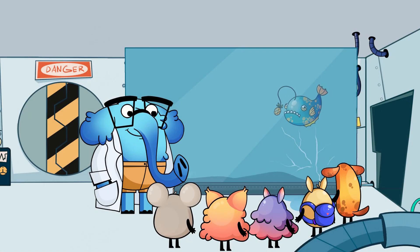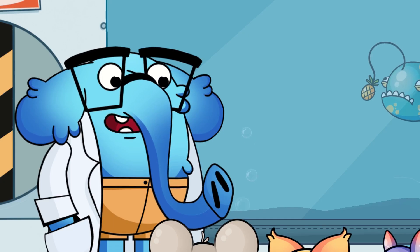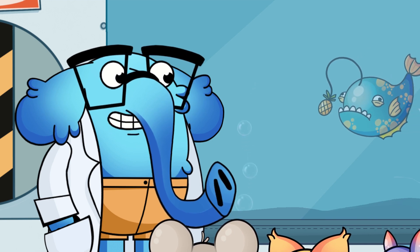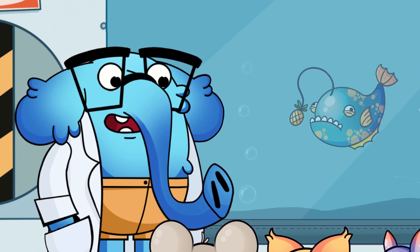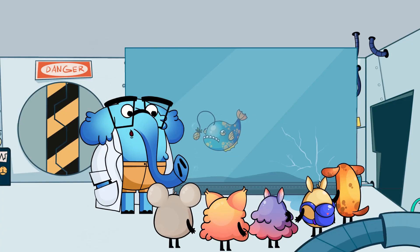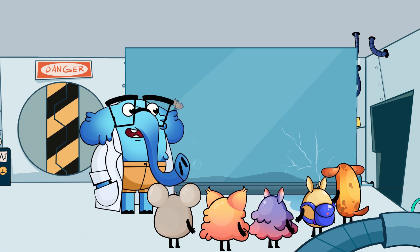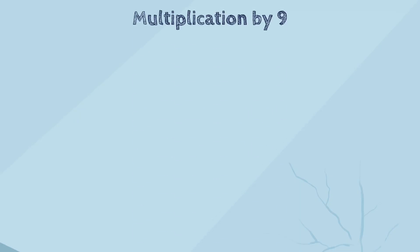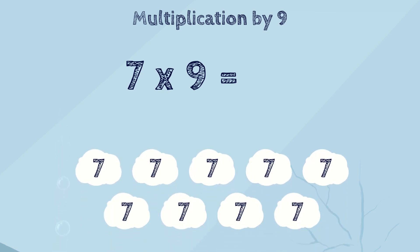Hello, kids. Hi, professor. Today, we'll continue to discover multiplication tricks and we'll look at multiplication by nine. I'll show you two different tricks — either can be used to find the answer. So let's start with the first one. What is seven multiplied by nine? It can be seen as nine groups of seven items. So to get the answer, we need to add seven nine times — it doesn't look that easy.